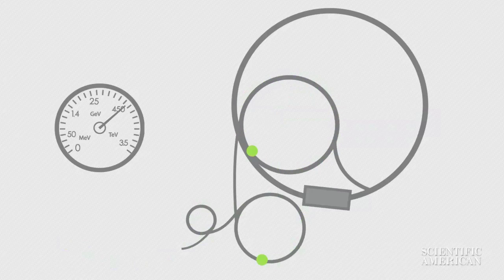Meanwhile, other protons go through the same process. Finally, they are fed into the main collider ring. Protons circulate in side-by-side pipelines in opposite directions.